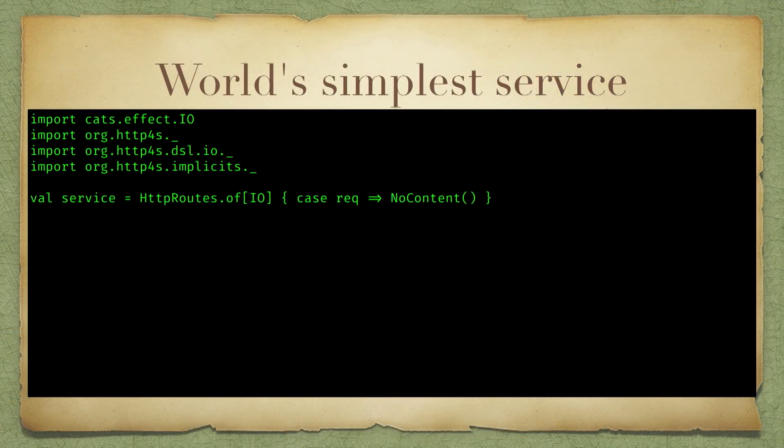So, what I have here is the world's simplest service. Using the HTTP4S library, we can very quickly and very easily develop a complete HTTP service. There's a type called HttpRoute, which does this elaboration I just described around that function signature. It is just a function.